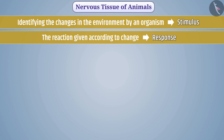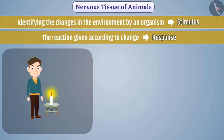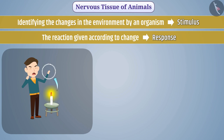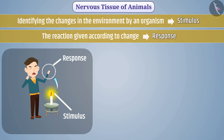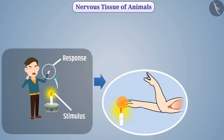For example, if we inadvertently touch a hot object, the touched part of the body is immediately taken back. Here the hot nature of the object is the stimulus and taking back the part of the body is the response. Information from skin cells reaches to the muscle cells of the arm and movement takes place.